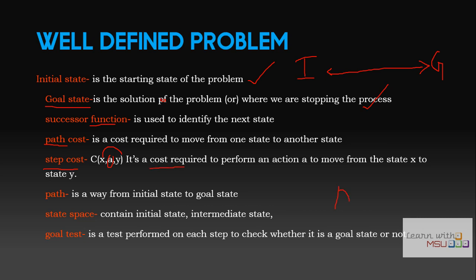Suppose you want to travel from place A to place B. You have different modes available: walking, bike, or car. Depending on the action chosen, there is a specific cost. If you use your car, the step cost — say the amount of fuel — will be very high. For a bike it will be less, and for walking it is the least. A path is a way from the initial state to the goal state, visiting intermediate states. The state space contains everything: the initial state, intermediate states, and the goal state.